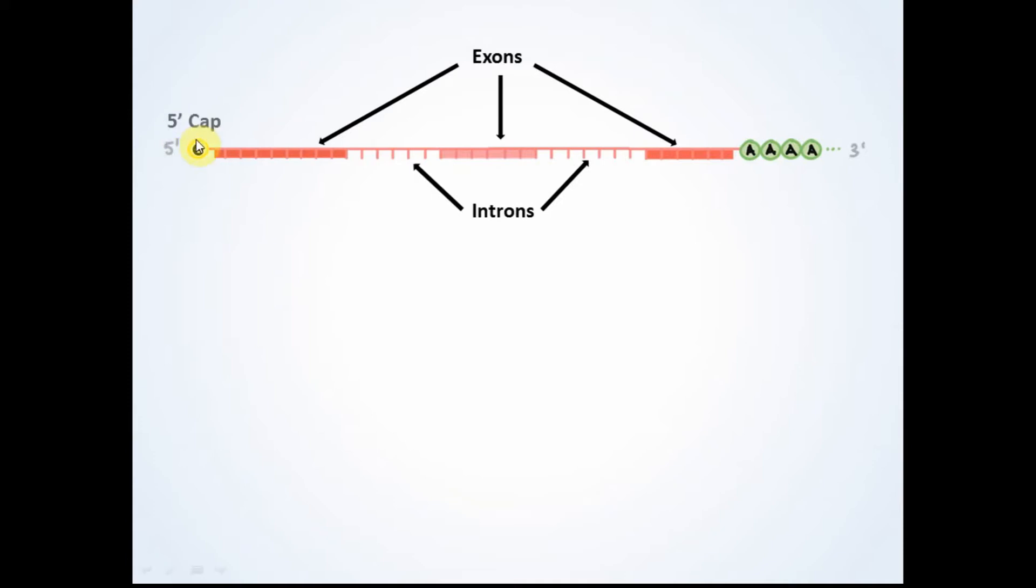Most mRNAs have a 5' cap and also a chain of AMP nucleotides added to their 3' end. This chain is called the poly-A tail. This tail is important to protect the mRNA during splicing, which results in the mature mRNA.